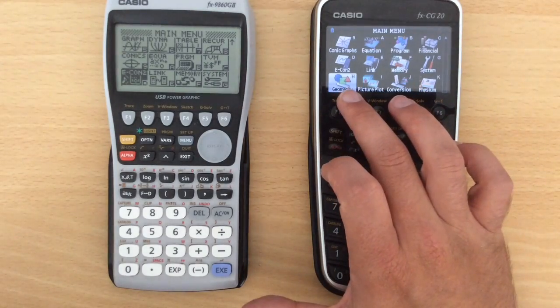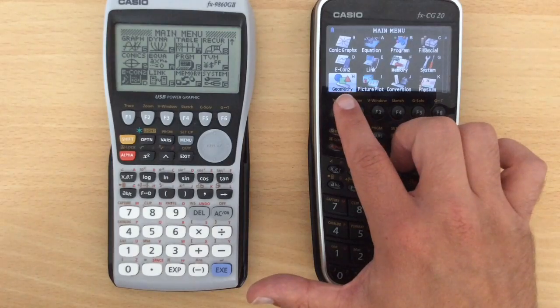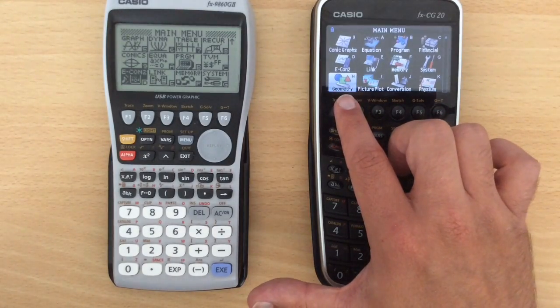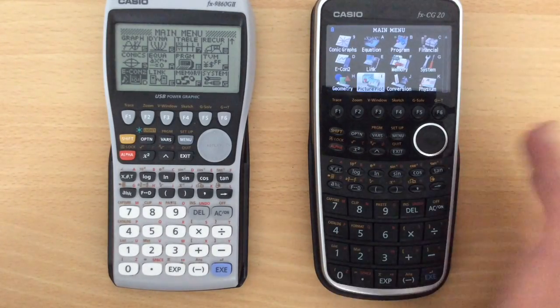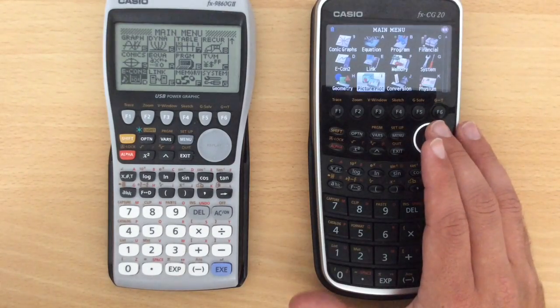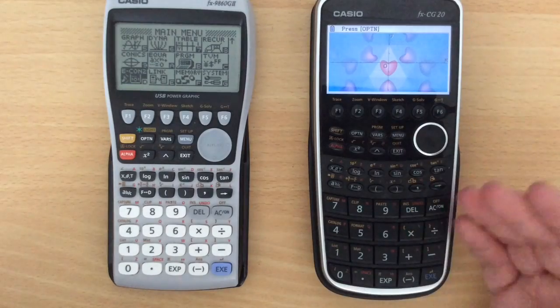We've got some geometrical parts. To be honest, I haven't used this one yet for drawing shapes and looking at the relations. I understand it's very powerful. The picture plot is a little bit of a gimmick. Essentially, you can draw a graph while using pictures and things in the background.